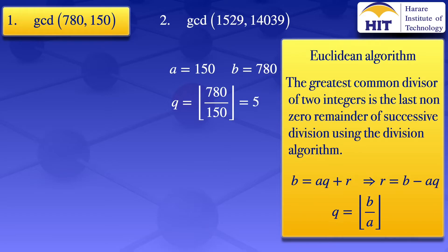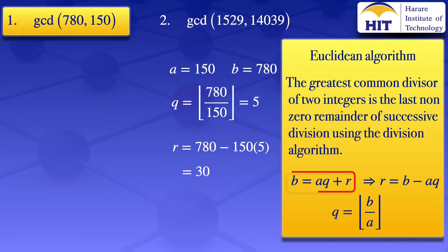Our remainder is B minus AQ, which gives us 780 minus 150 times 5, which gives us 30. So we have the remainder as 30. And using the division algorithm, B equals AQ plus R, so we have 780 equals 150 times 5 plus 30.